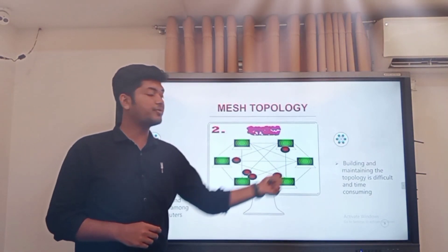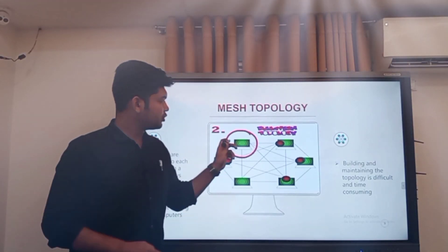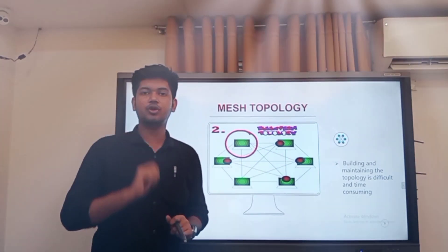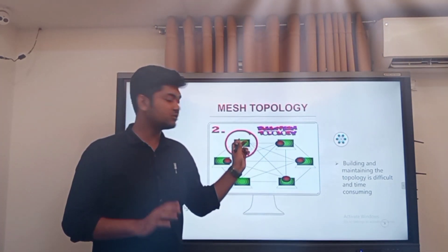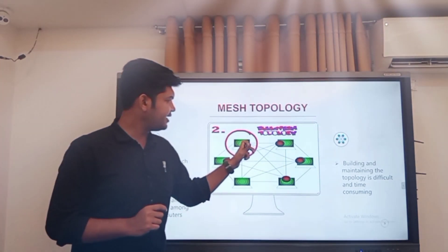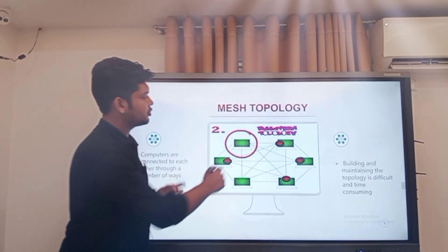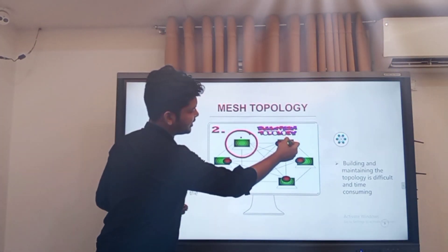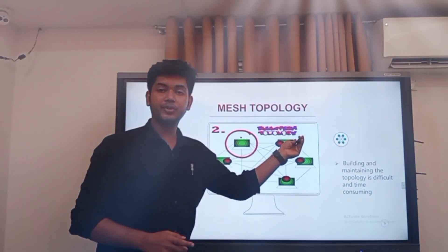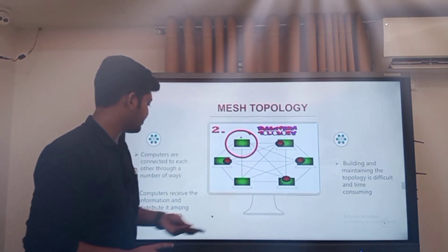Now we will learn about mesh topology. In mesh topology, all computers are connected with each other. We can see there are six computers in this picture. In this mesh topology, one computer can transmit data to all other computers. If I consider one computer, it will be connected with all the other computers, and the same applies for every other computer. For better understanding we can see this practically.